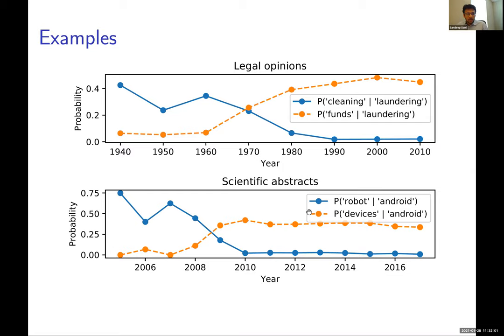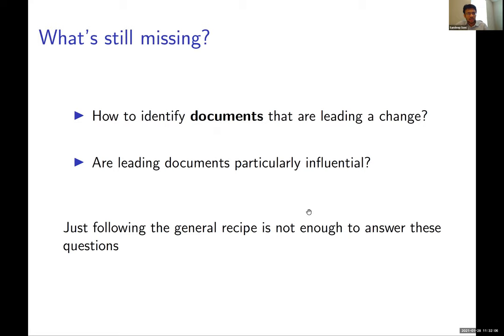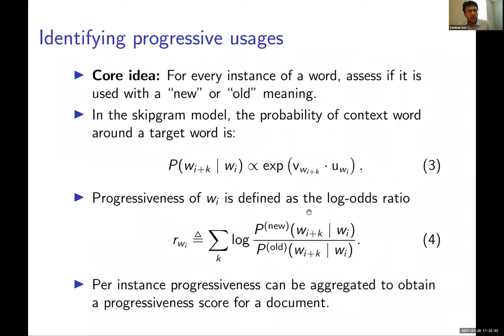Following this recipe is good — it can help identify words that have changed in meaning. But what's still missing is: how do you identify documents that are leading that change? These are documents that used words at a time when other documents were still using the older meaning. And if we can identify such leading documents, are they particularly influential? Following the standard recipe alone is not enough to answer these questions.